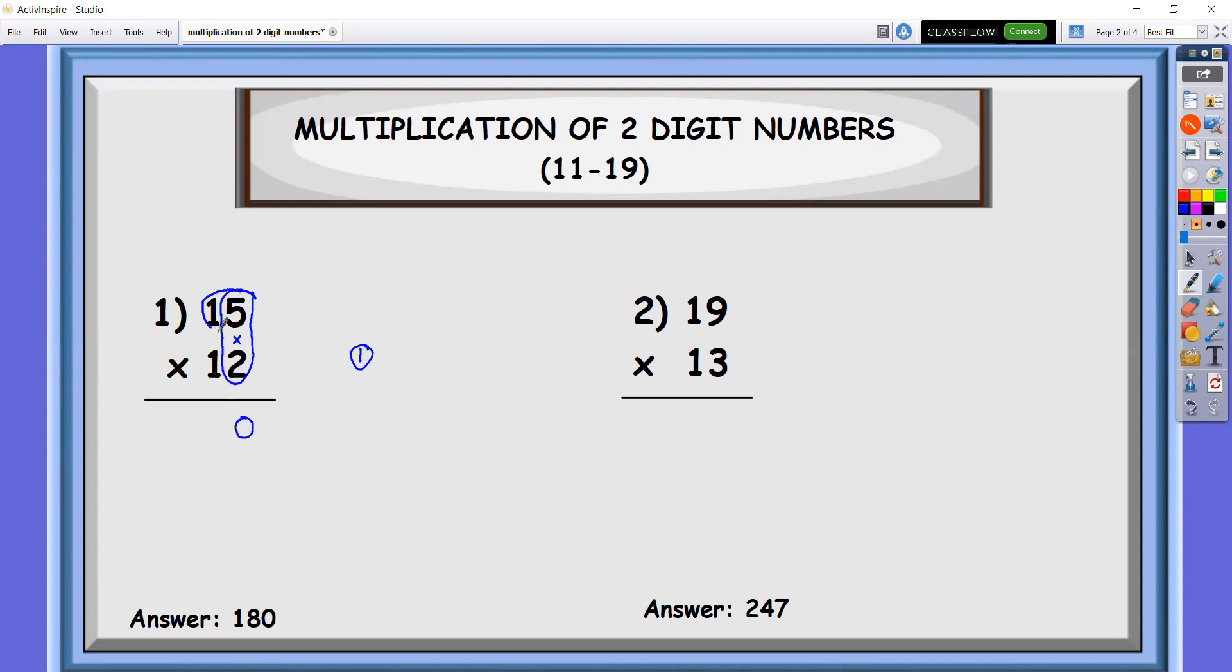Therefore we will get 15 plus 2, so that is 17, plus 1 we got 18. Therefore this is now the answer for number one: 180. So we have the same answer here.